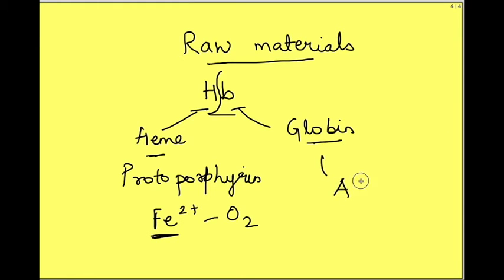Similarly for the globin component, amino acids are required because it is a protein component of the hemoglobin. So in case of malnutrition, if there is protein deficiency, again there will be deficiency of hemoglobin synthesis. There will be anemia.